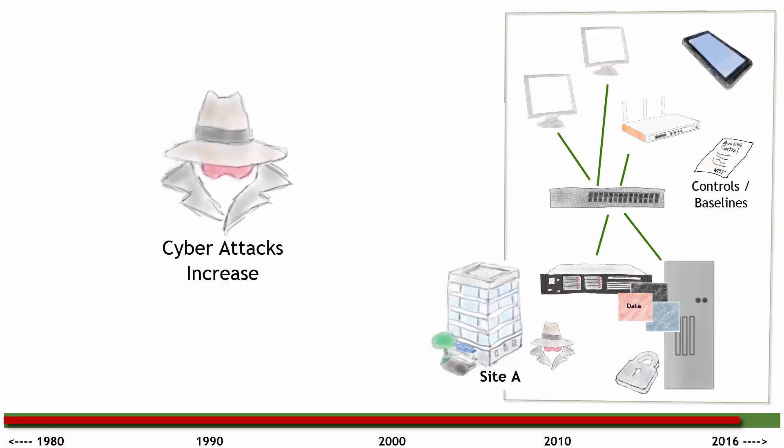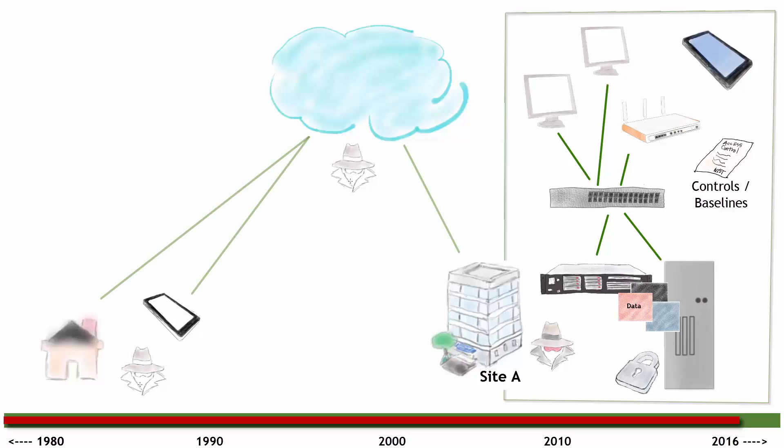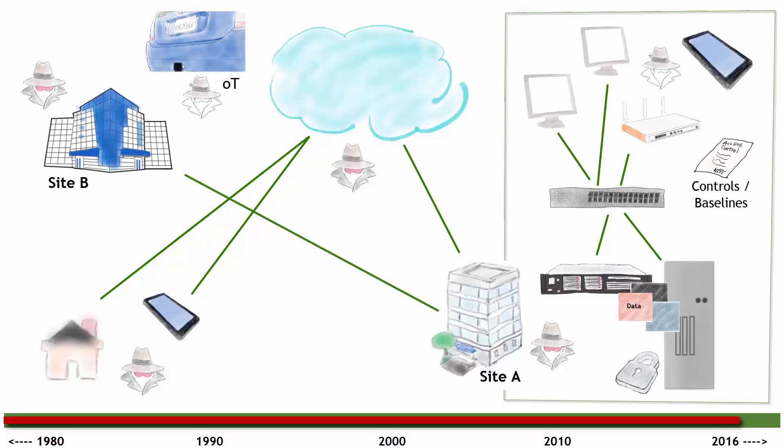We still have access controls and we still have cyber attacks. Why? Because it's increased - the amount of data available now is huge. From our homes we're accessing the internet, putting financial data and personal information up there. Our mobile devices are everywhere, and so we have attacks happening in our homes, mobile devices, cloud, IoT.